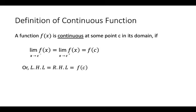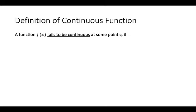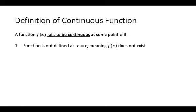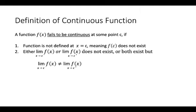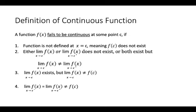A function fails to be continuous at x = c if: (1) f(c) does not exist; (2) either the left hand limit or right hand limit does not exist, or both exist but are not equal; (3) the limit as x→c of f(x) exists but is not equal to f(c); (4) left hand limit equals right hand limit but both are not equal to f(c). This last case is known as removable discontinuity, and it can be removed by redefining the function.